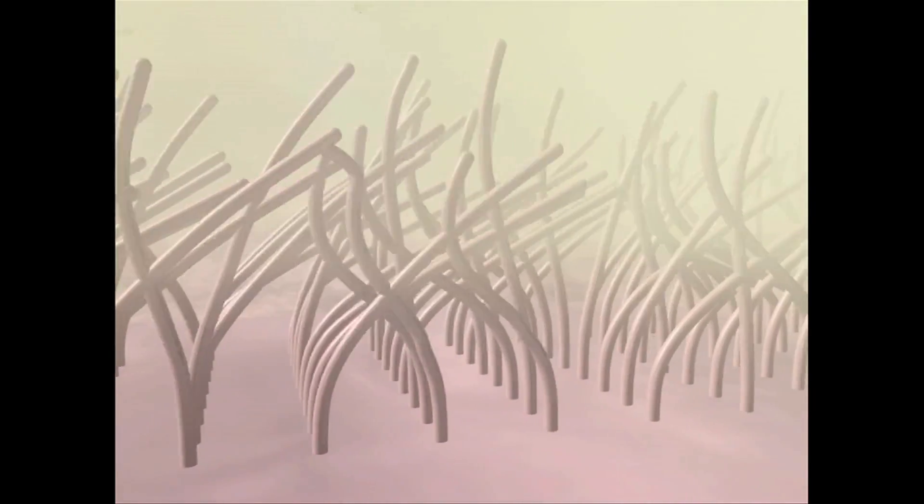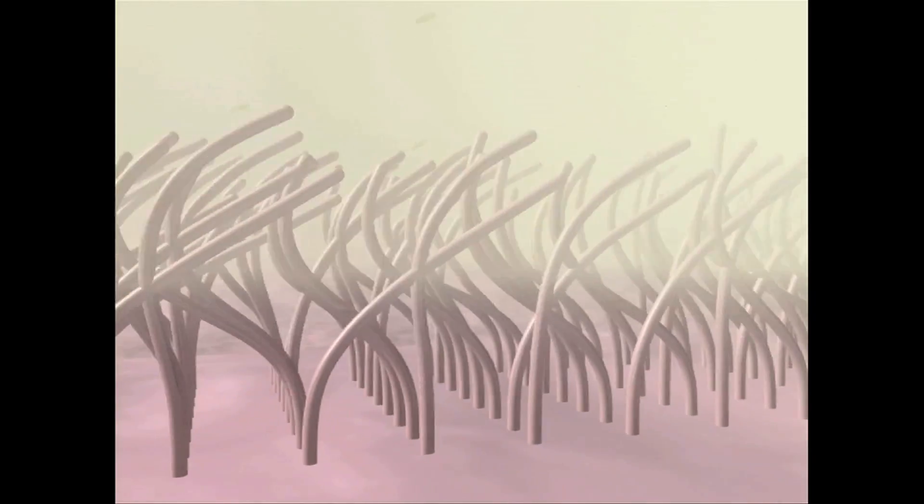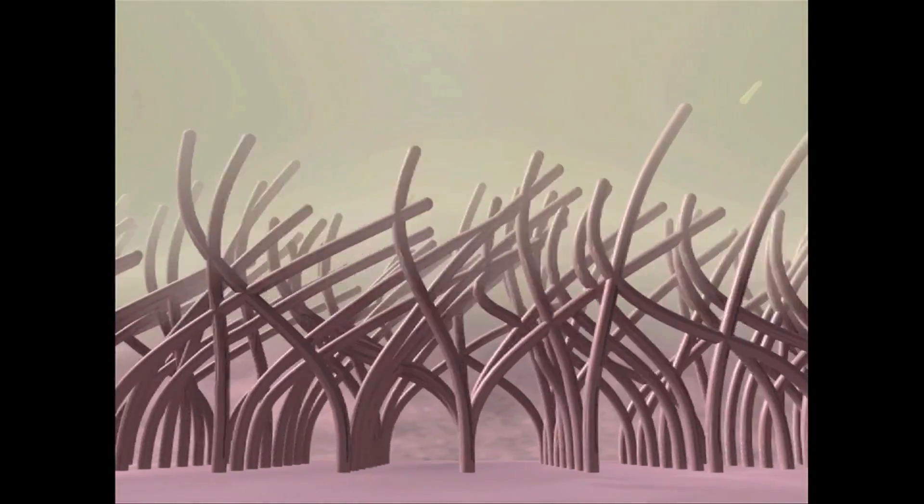But how do these mighty nanomachines move in the first place? To answer this question, we must journey to where no human has ever set foot before, beneath the cell membrane. The cell membrane encapsulates the entire cell and drapes over each cilium.